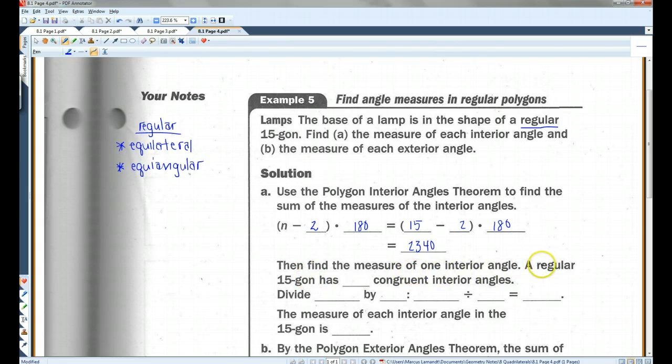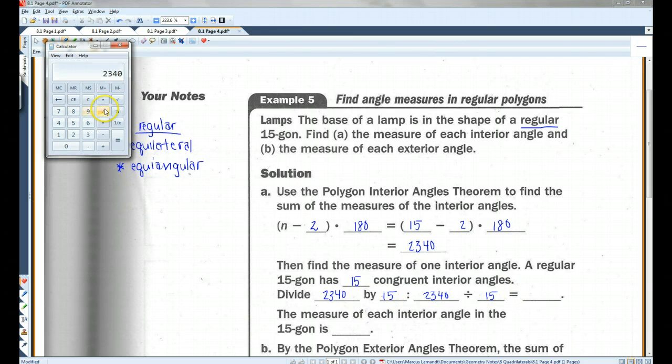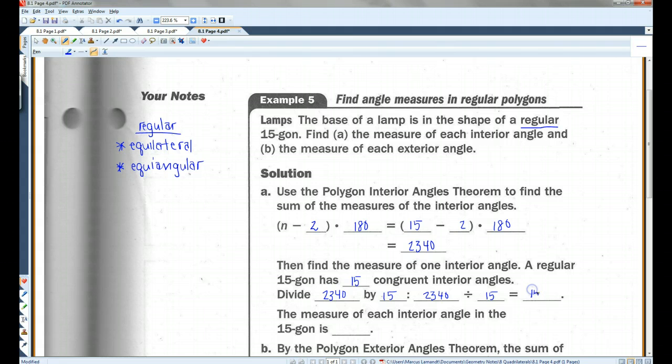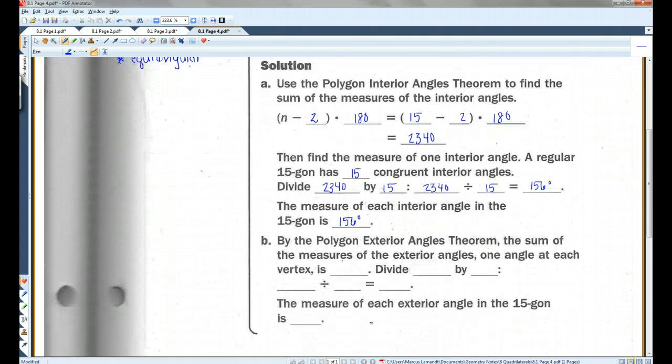Okay, then find the measure of one interior angle. A regular 15-gon has 15 congruent interior angles. Divide 2340 by 15. So 2340 divided by 15. Let's pull out that calculator again. 156. Okay, so there are 15 angles. Each angle is 156 degrees. So the measure of each interior angle in the 15-gon is 156.